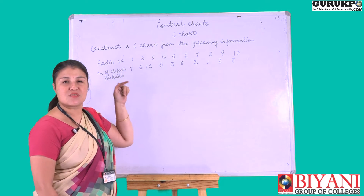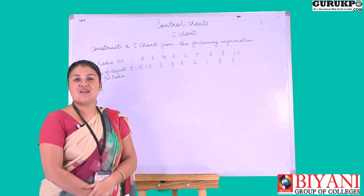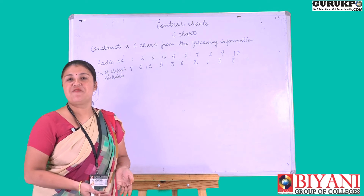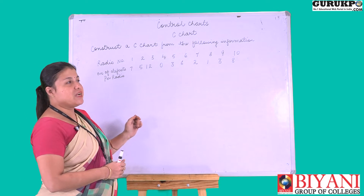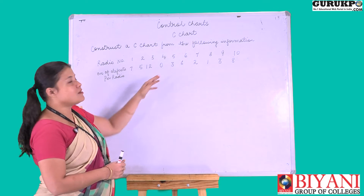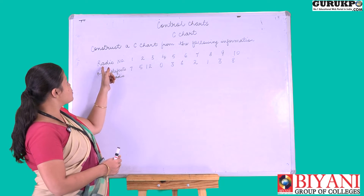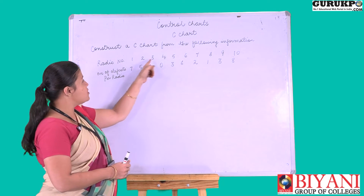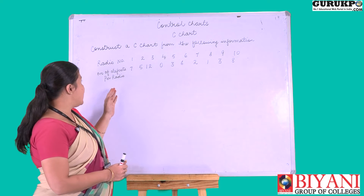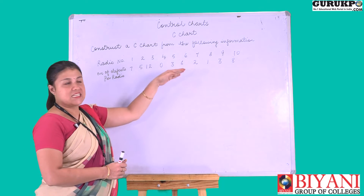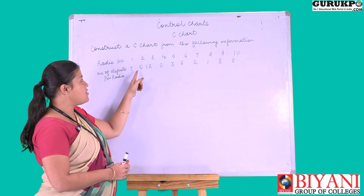The C chart is basically used to find the number of defects in a particular item. In order to find the defects, we are going to solve this question. The data given to us is for 10 radios. For radio number 1, the defects are 7; for number 2 it is 5; for number 3 it is 12, and so on.